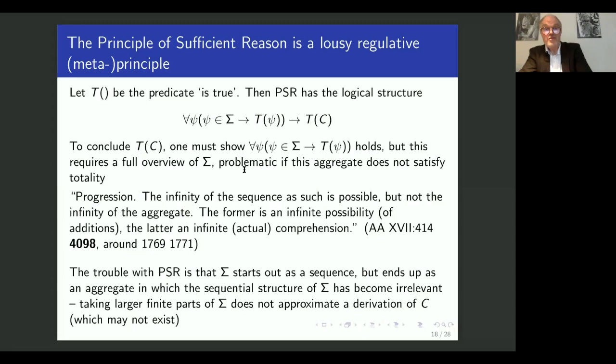That means that in order to conclude that the cognition C is true, you have to show this universal statement. But this requires a full overview of the set of all consequences of C, and this is problematic if this aggregate does not satisfy totality.